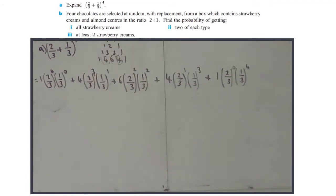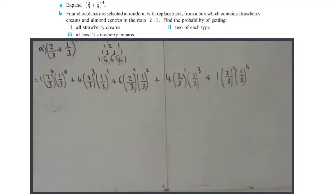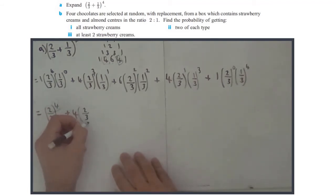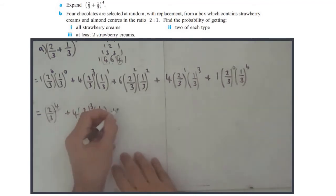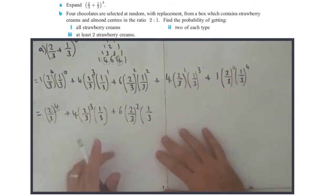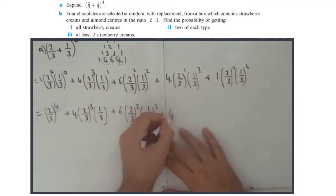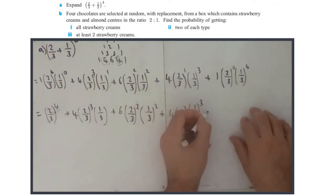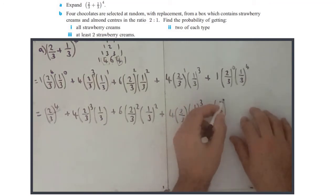You do need to be aware in binomial expansion questions that the first and last coefficients are one and N, and certain simplifications you won't be able to get by without. Because I've actually been specifically asked to expand it, I should simplify. So that would be: two-thirds to the power of four, plus four times two-thirds cubed times one-third, plus six times two-thirds squared times one-third squared, plus four times two-thirds times one-third cubed, plus one-third to the power of four.